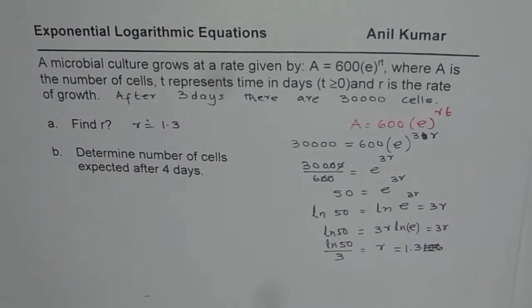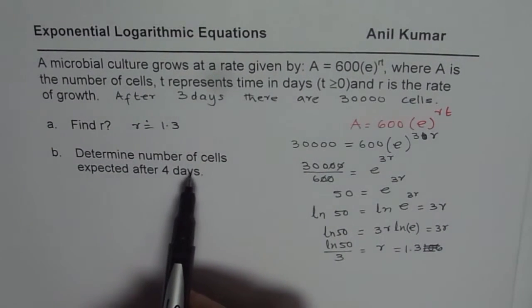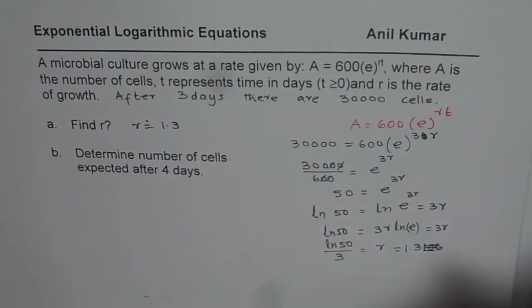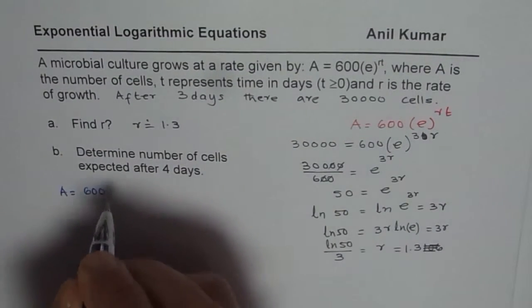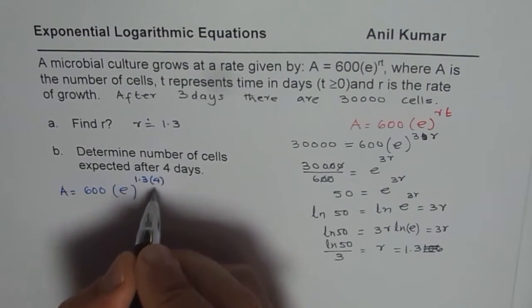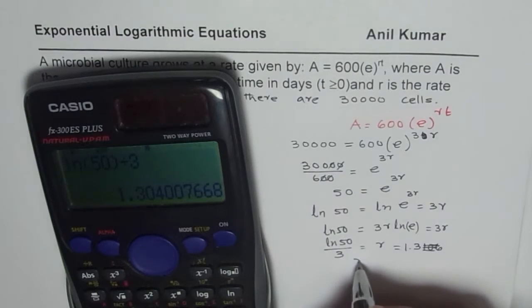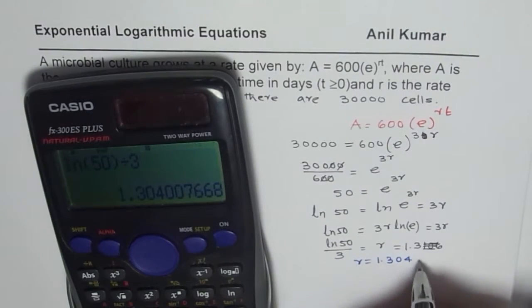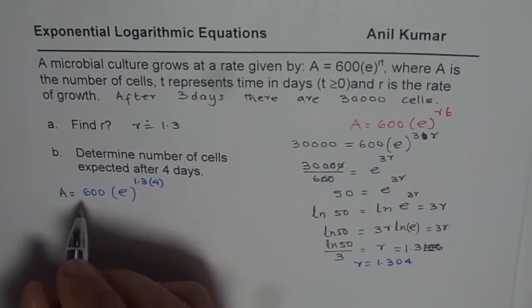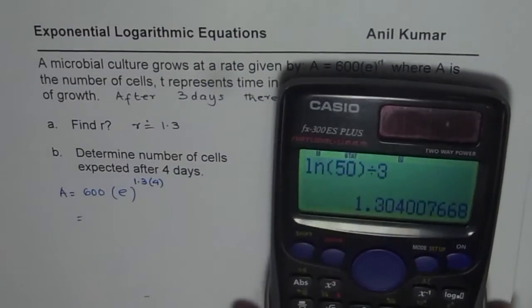The question is determine number of cells expected after 4 days. We will use this value of 1.3 in the formula and find the number of cells. A is equal to 600 e to the power of 1.3 times 4. I'd like you to write down the exact value r equals 1.304 and see how much variation we get. We are using calculator, so let's use it and find the answer.